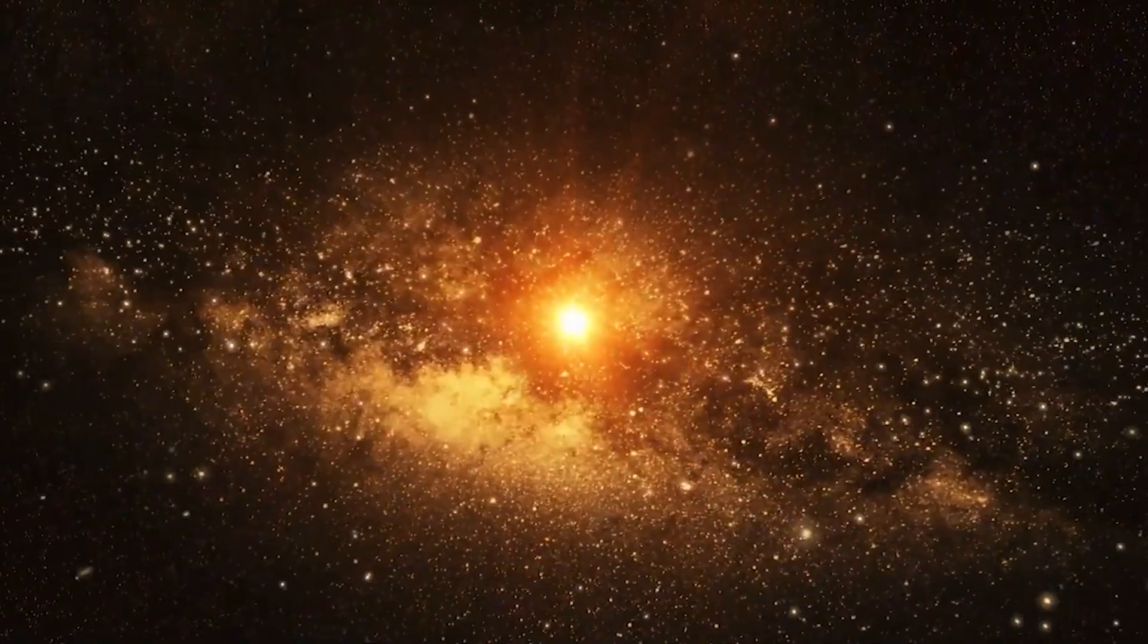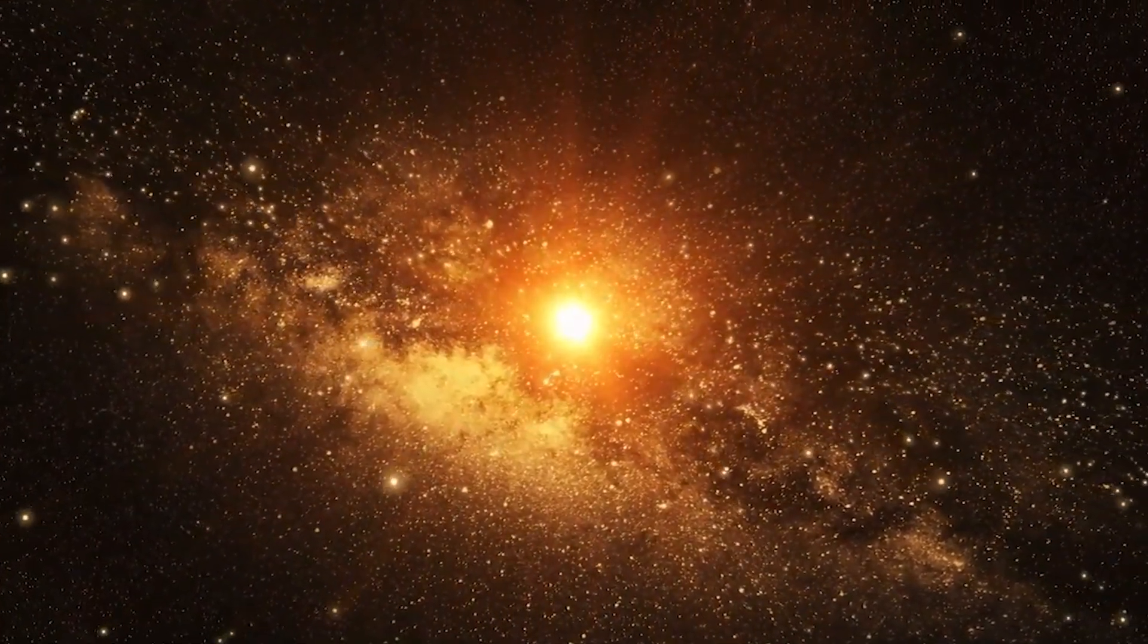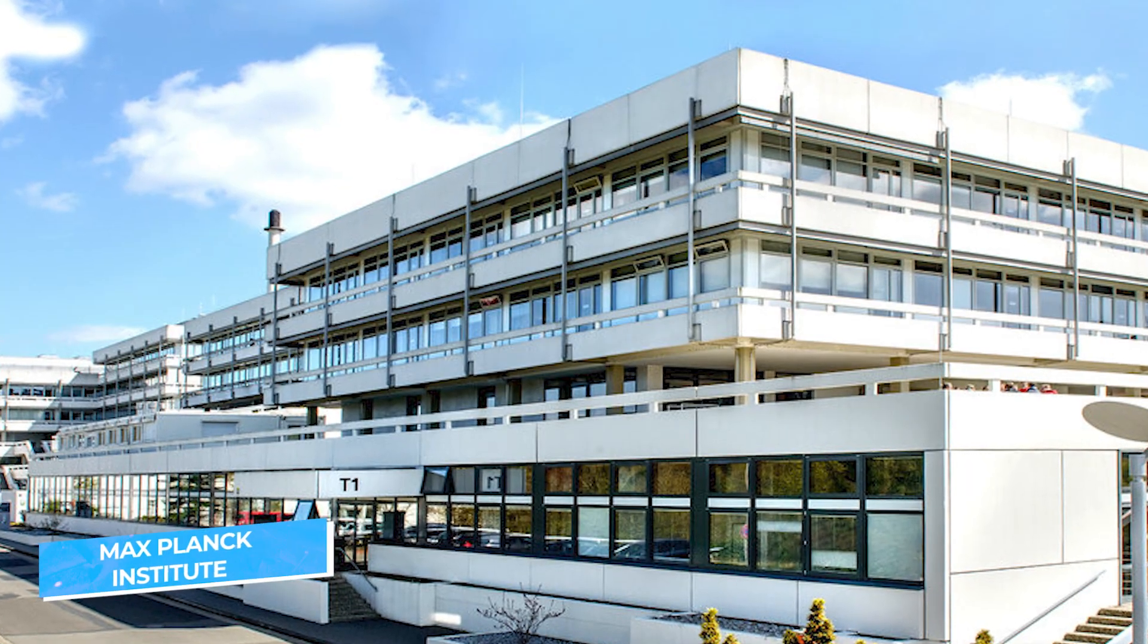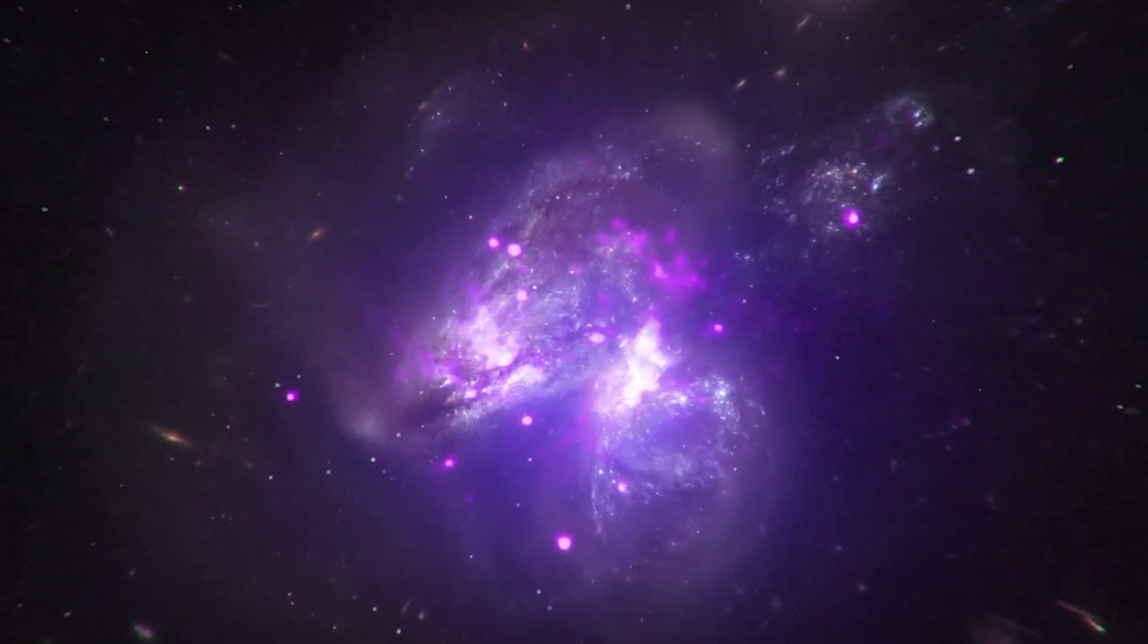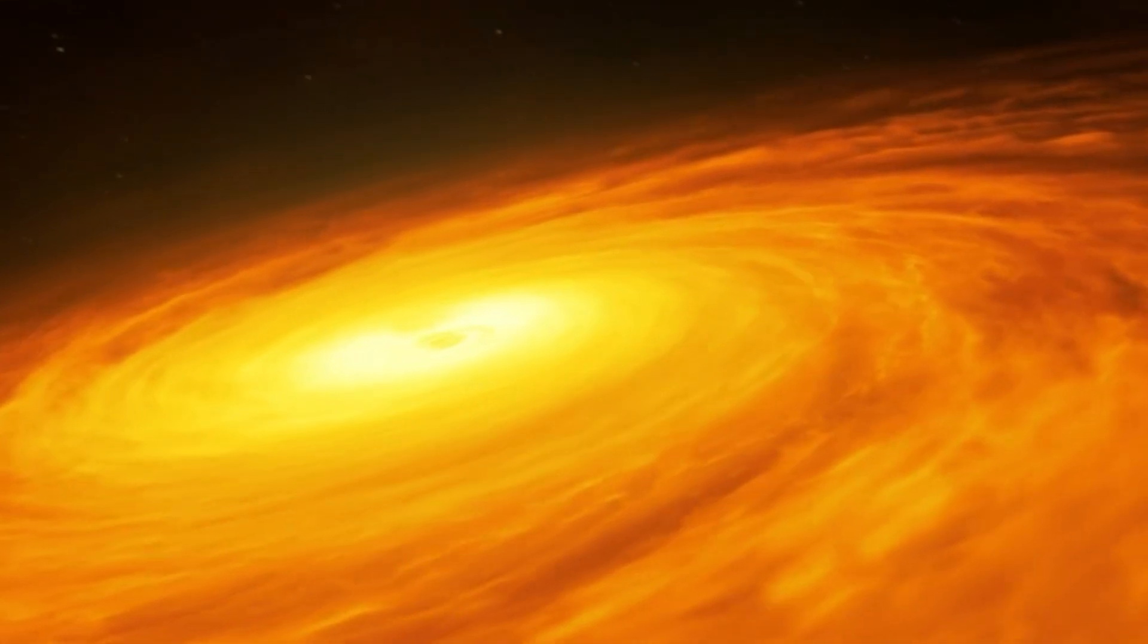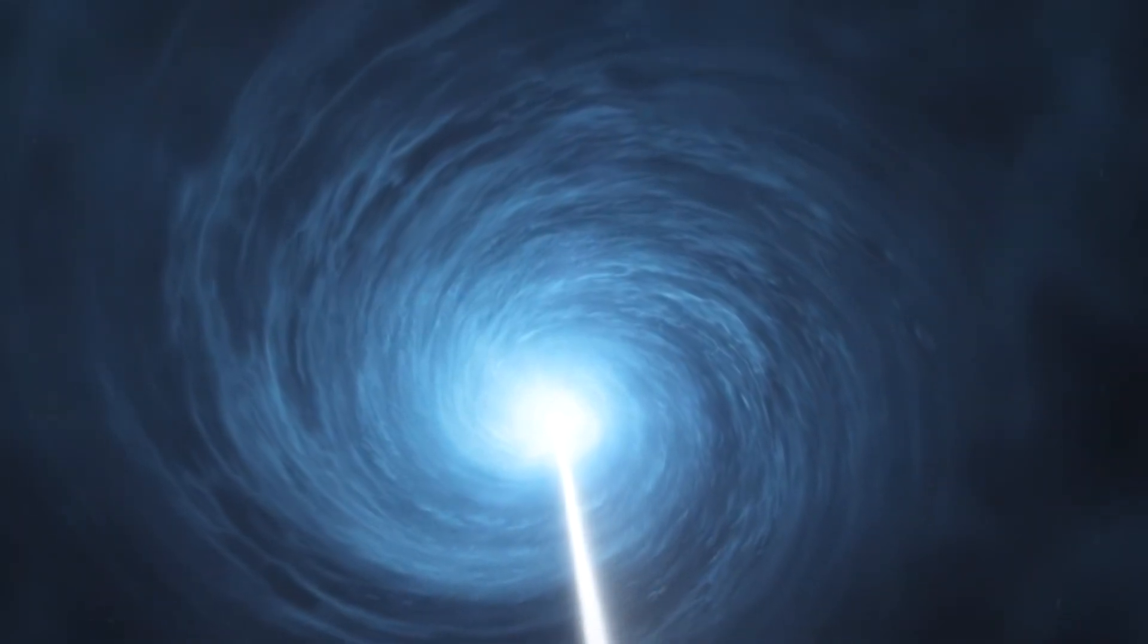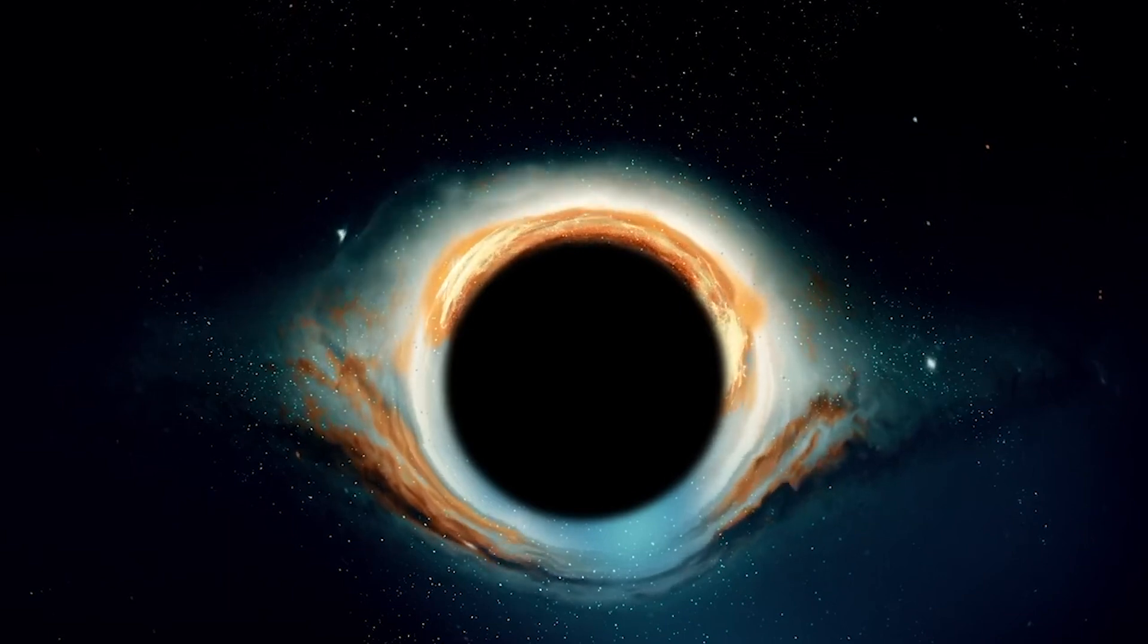When Webb looked at this ancient quasar up close, things got even weirder. The team at the Max Planck Institute found that despite being impossibly young, this cosmic monster looked shockingly normal. It had all the features of modern-day quasars, the same type of dust ring, the same feeding patterns. It's like finding a perfectly modern city in ancient ruins.